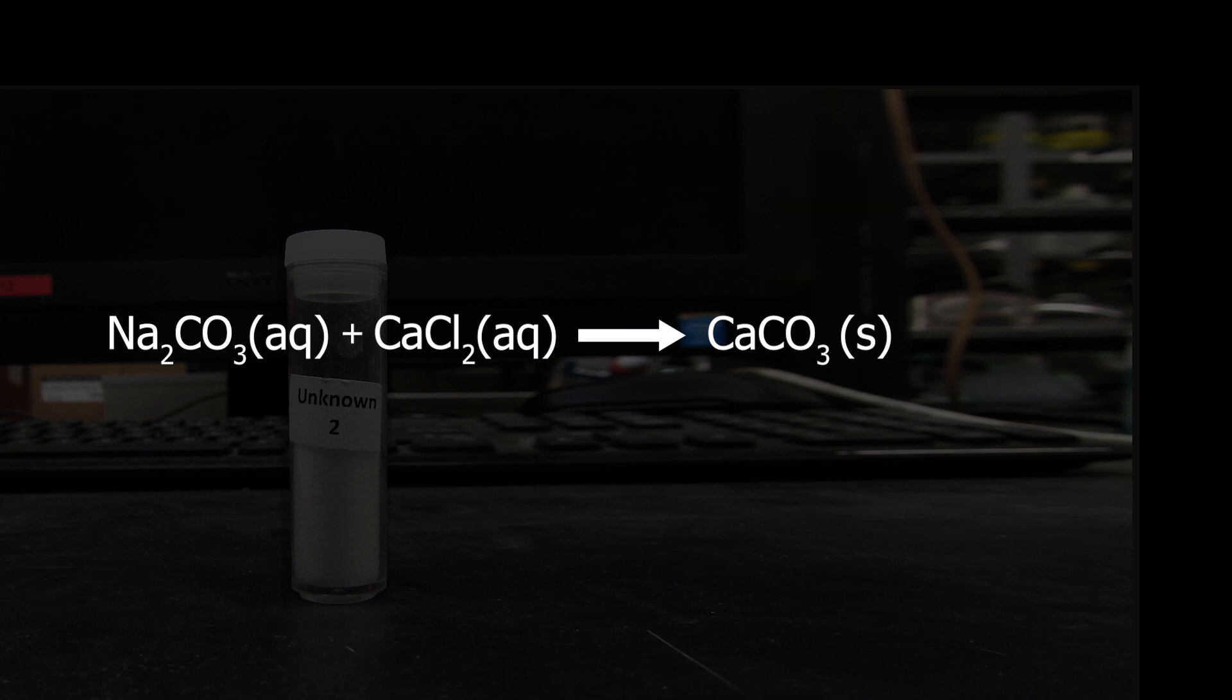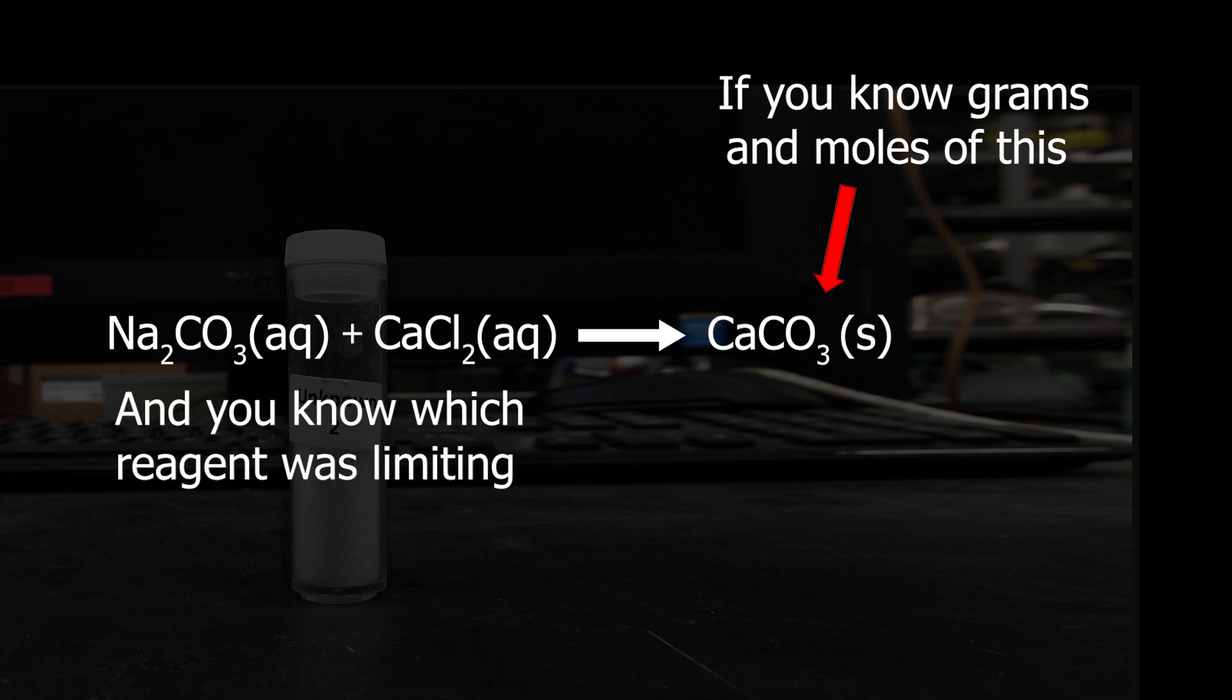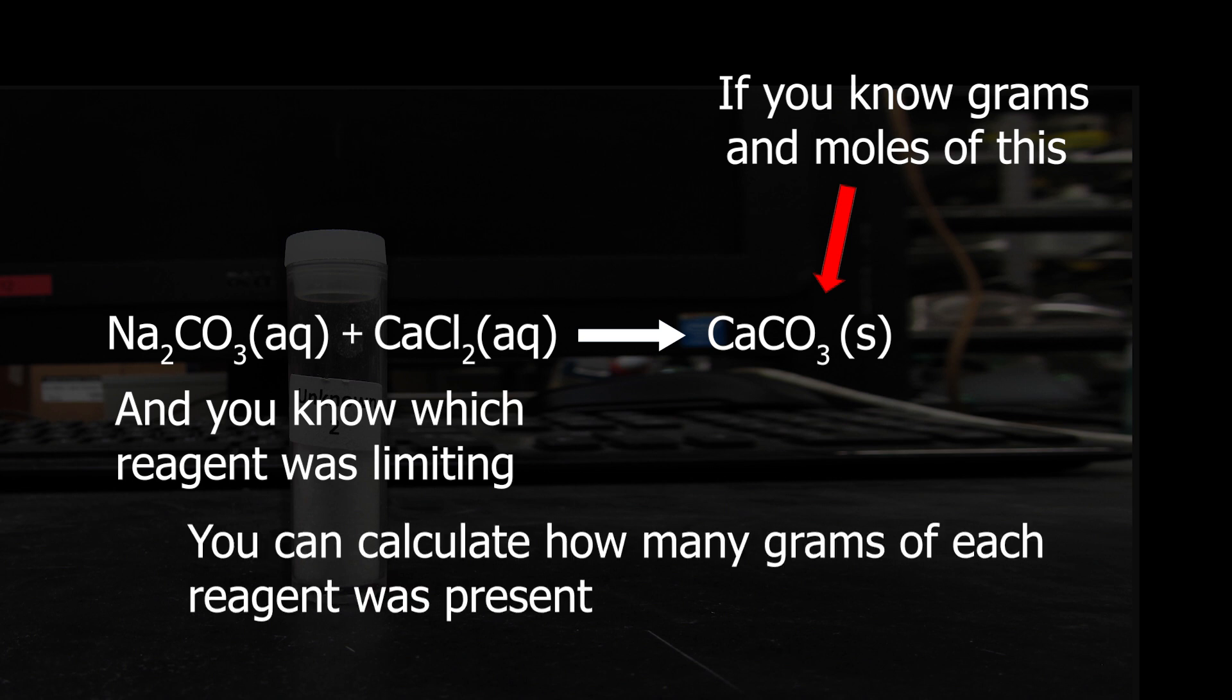Therefore, if you can determine how many grams of calcium carbonate precipitate you made, and you can determine which of the two salts in the mixture was in excess and which was limiting, you can calculate how many grams of sodium carbonate and how many grams of calcium chloride dihydrate were in that mixture, and from there calculate the mixture's percent composition.